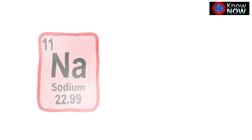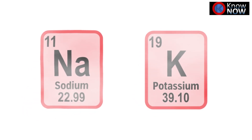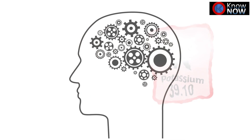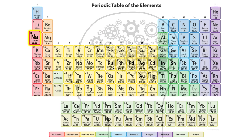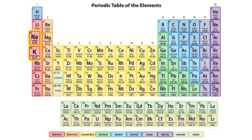Why are Na and K called sodium and potassium, and not natrium and kalium? One thing that always bothered me was that the chemical elements sodium and potassium have symbols Na and K respectively. They are so common, they were identified relatively early in the history of chemistry, and they are everywhere. So why aren't the symbols SO and PO, for example? SO is not taken, and PO stands now for polonium, which Marie Curie extracted from uranium ore about 90 years after potassium got its name. So why?